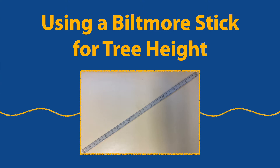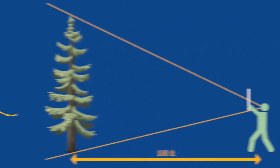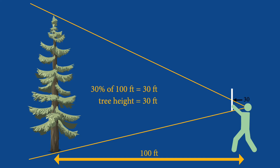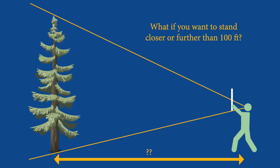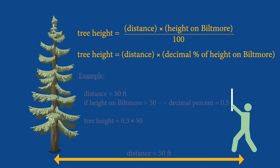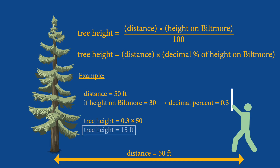The Biltmore or tree stick can also be used for measuring height. Standing 100 feet from the tree, hold the stick out 25 inches from your eye oriented vertically. Line up the bottom or zero with the base of the tree, and without moving your head, sight up the stick to the top of the tree and read the height from the scale where your line of sight and the top of the tree intersect. For the 100-foot distance, tree height is read directly — 30% of 100 feet is 30 feet. However, if you stood 50 feet from the tree and the scale read 30, then the tree would be 30% of 50 feet, or 15 feet tall.